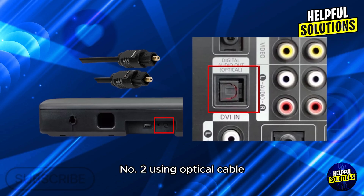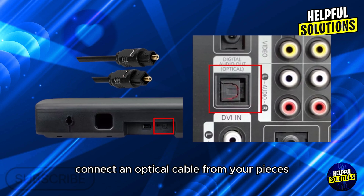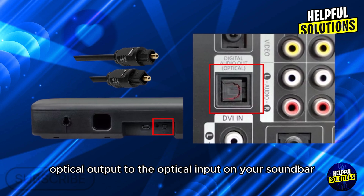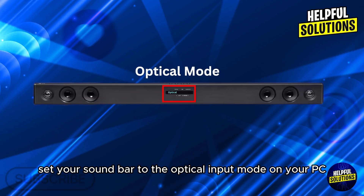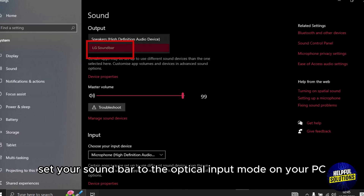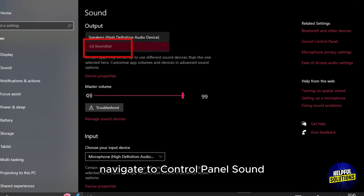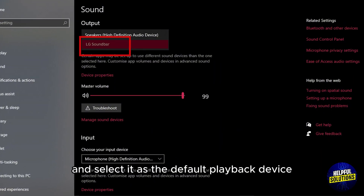Number 2: Using Optical Cable. Connect an optical cable from your PC's optical output to the optical input on your soundbar. Set your soundbar to the optical input mode. On your PC, navigate to Control Panel, then Sound, select your soundbar and set it as the default playback device.